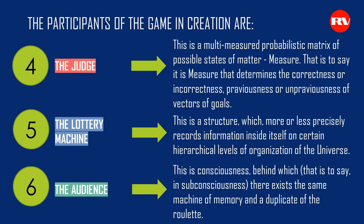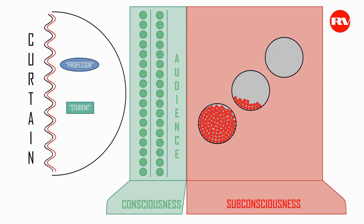The audience is consciousness, behind which — in subconsciousness — there exists the same machine of memory and a duplicate of the roulette. This is how one intellect makes judgments concerning another intellect. The situation becomes more complex when there are three lottery machines behind consciousness, in subconsciousness. Two players, the system and the environment, the curtain, the audience, and three machines. One lottery machine is completely full — this is a past stage of evolution. The second is approximately 30% full — the current stage of evolution. And the third is absolutely empty — a forthcoming stage of evolution, informationally empty, although matrixly multi-predetermined.